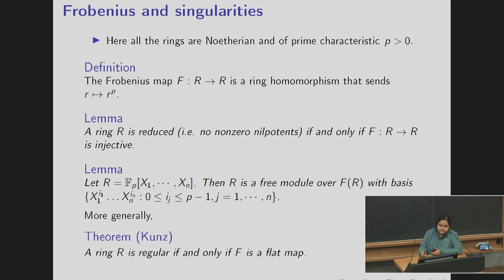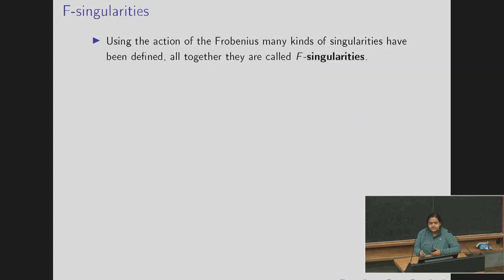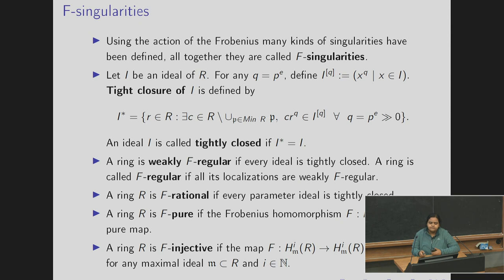More generally, it's a classical result due to Kunz which says that the ring is regular if and only if the Frobenius is a flat map. Now we relax the flatness condition in various ways. We get various kinds of singularities and altogether they are called F-singularities.